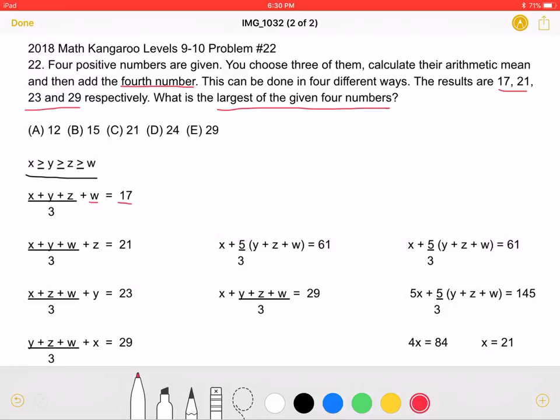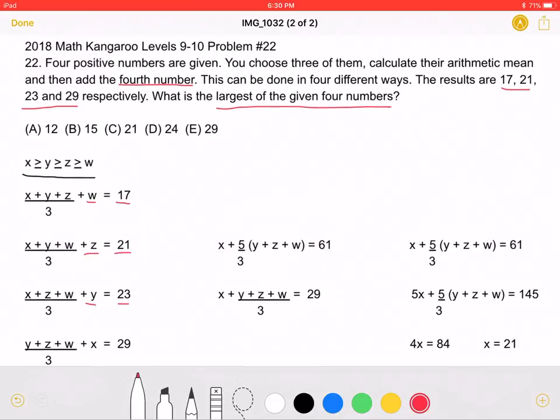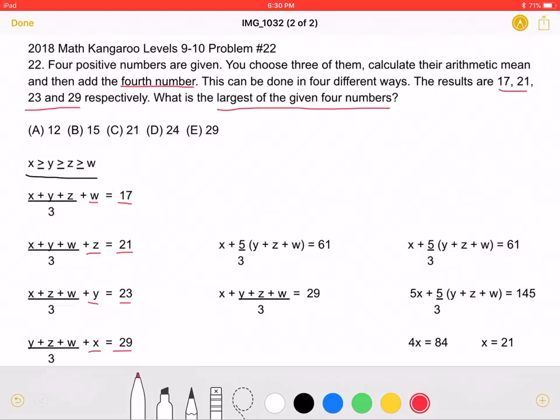This means that we will be adding Z, the second smallest number, when we get the second smallest answer. And so on for Y and X. X being the greatest number will result in the greatest answer.